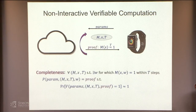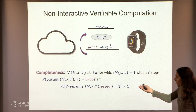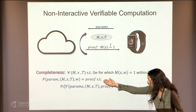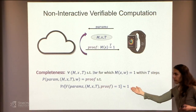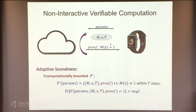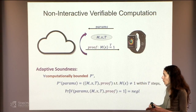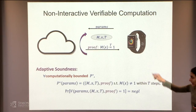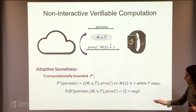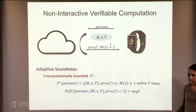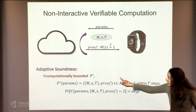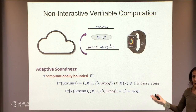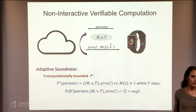What do we want? We want completeness and soundness. Completeness: if you did a computation correctly, the verifier will accept. Soundness is more tricky — we want adaptive soundness. Any cheating prover who sees the parameters and chooses maliciously any computation: if the computation is not one and he proves that it is, he'll be accepted only with negligible probability. We only focus on computationally bounded cheating provers — our prover cannot break LWE.